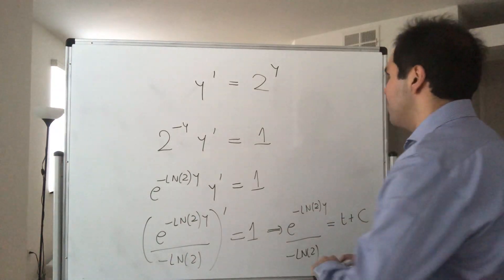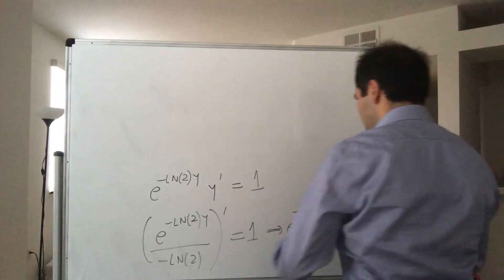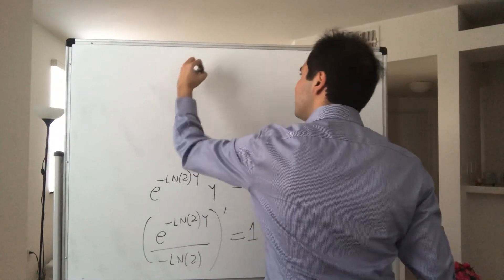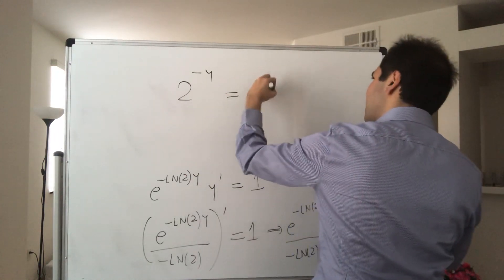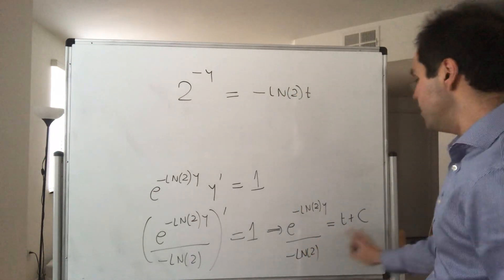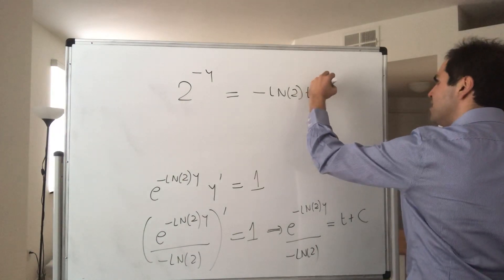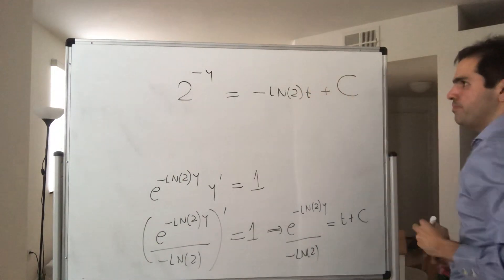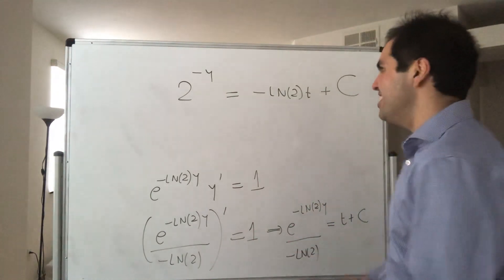Let's multiply both sides around. So e to the minus ln of two y, which is two to the minus y, equals minus ln of two t. Then minus ln of two plus a constant just becomes a generic constant, so that's plus c. Let's use a different notation.